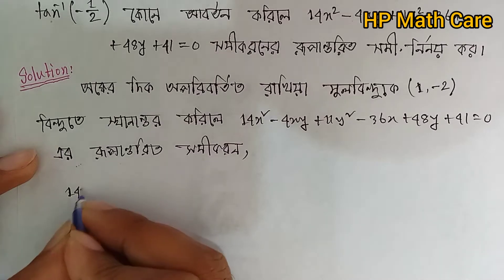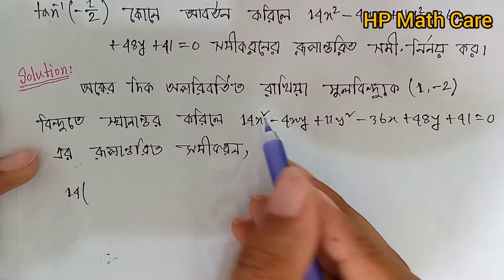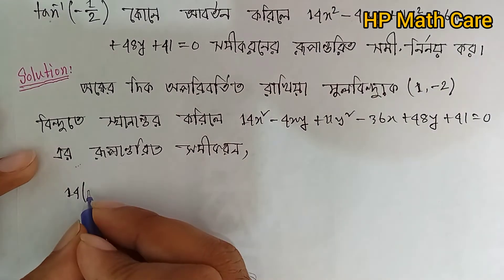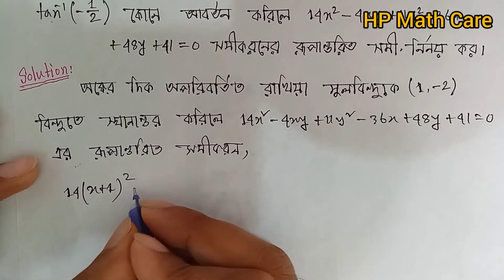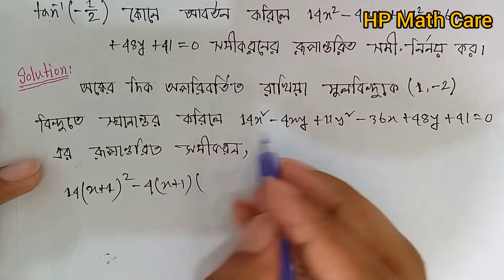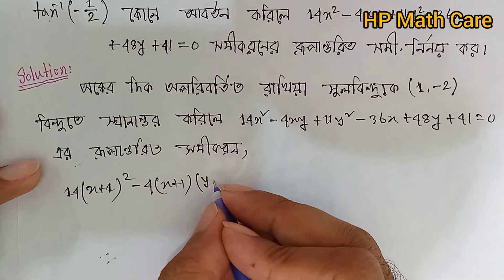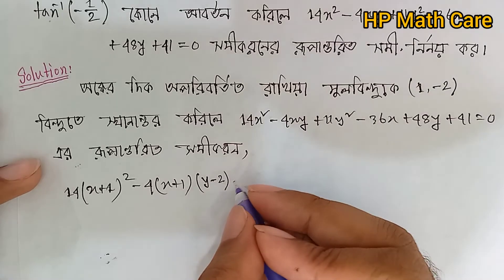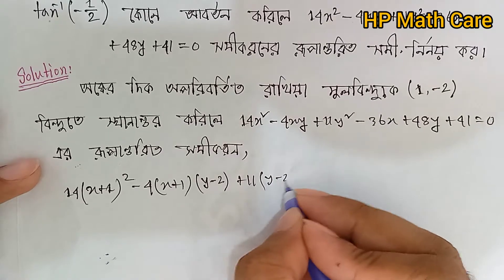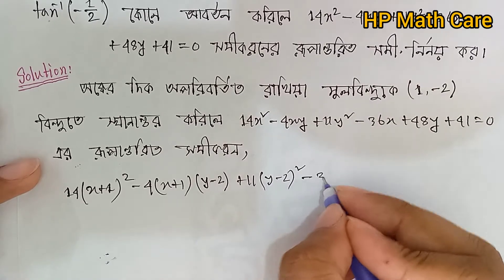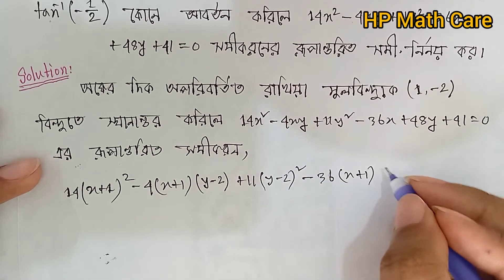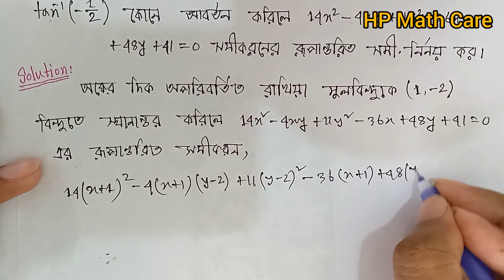If you want to make a sumi kornne, we will see. x is x̄, ackat: x plus alpha — alpha is arbitrary, so x is x̄ plus 1. x plus 1. y is ȳ: y plus beta, y minus 2, y minus 2. Plus 11: y is ȳ, so y minus 2. y minus 36. x is x̄, so x plus 1. x plus 48. y minus...